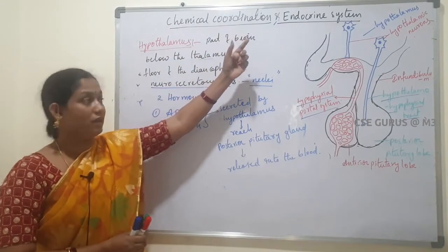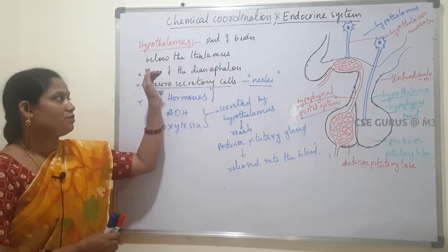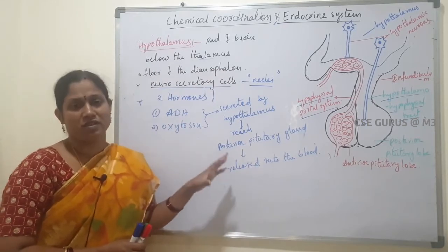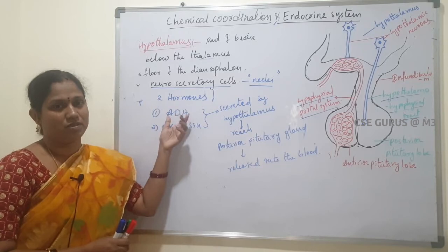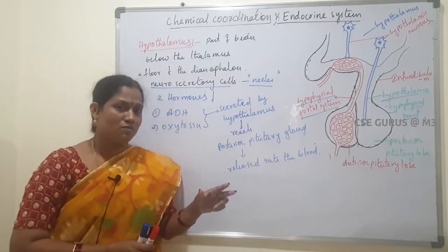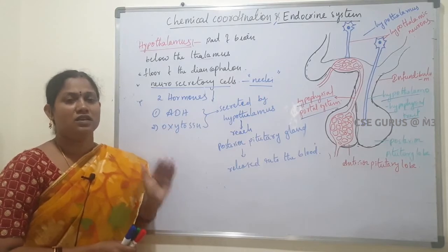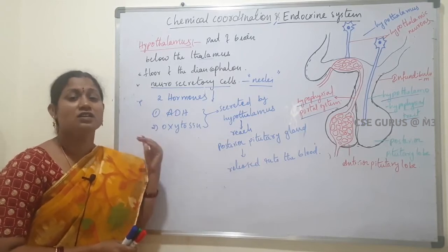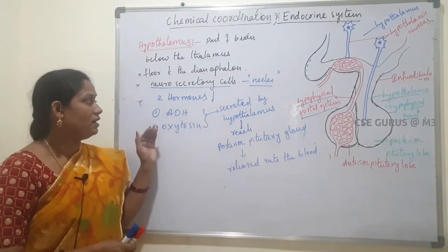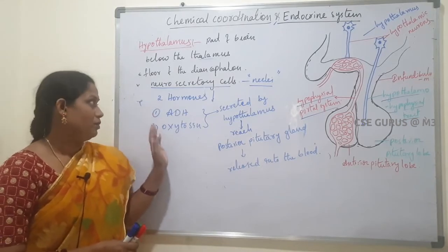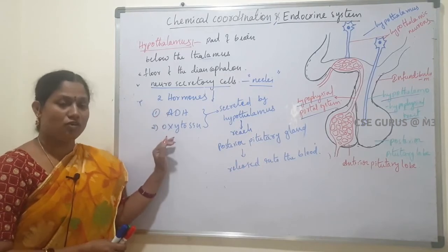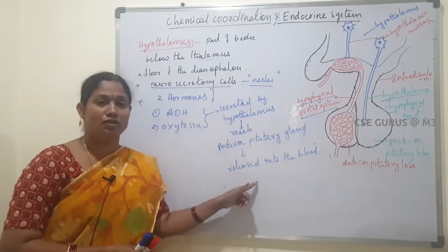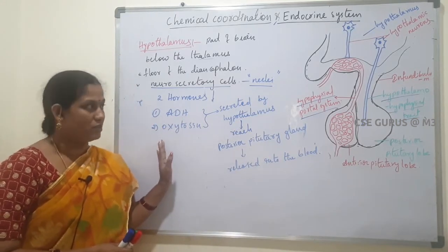In summary, hypothalamus is a part of the brain, located below the thalamus, in the floor of the diencephalon. It connects the endocrine system and nervous system. It secretes releasing hormones and inhibitory hormones that control the pituitary gland. It also secretes ADH and oxytocin, which are stored in the posterior pituitary gland and released into the blood.